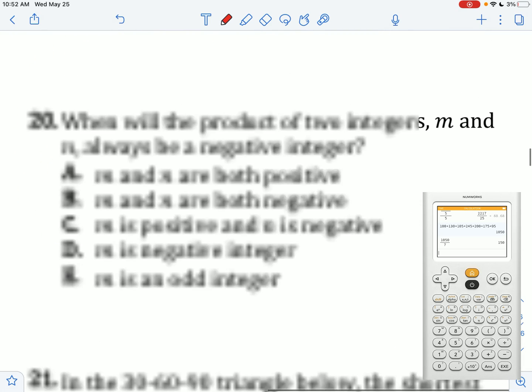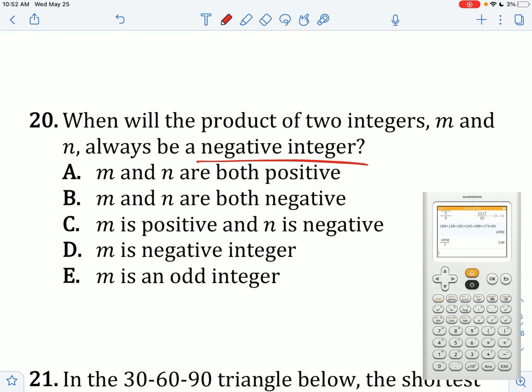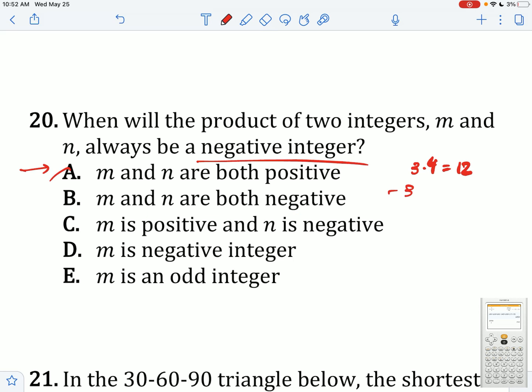When will the product of two integers always be a negative integer? If you want a negative integer, what happens if they're both positive numbers? That would be like 3 times 4. That's 12. That's not negative. If they're both negative, like negative 3 times negative 4, that gives me 12. Still doesn't work. If m is positive and n is negative, like negative 3 times 4, that gives me negative 12. So this one works. But let's check the others. If m is negative 4 and n is negative 5, I end up getting positive numbers. So that doesn't work. Odd even doesn't have anything to do with this.